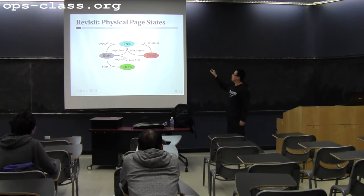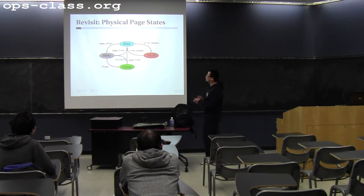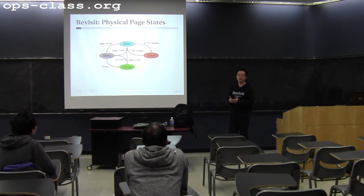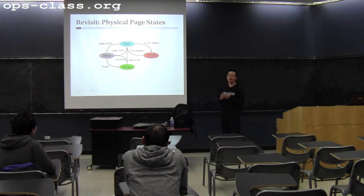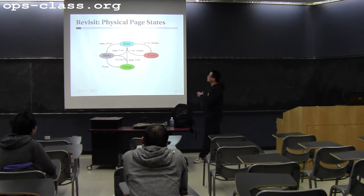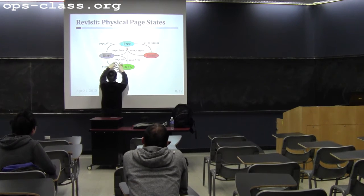A free page becomes fixed when you call alloc_kpages and return those pages. Fixed pages become free when you call free_kpages on them. Once you have user programs and user address spaces, things become more complicated. Inside VM fault, when you get a page fault and allocate a physical page for a user, that page's state becomes part of the user-used category — and with swapping, we need to track whether it's dirty or clean.